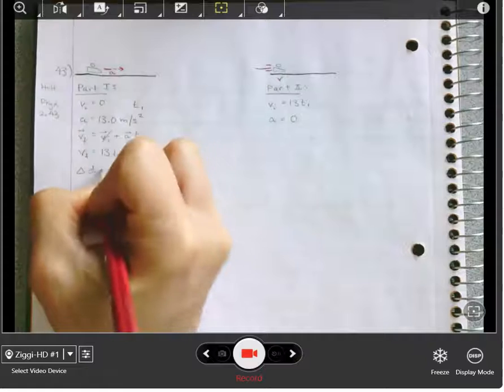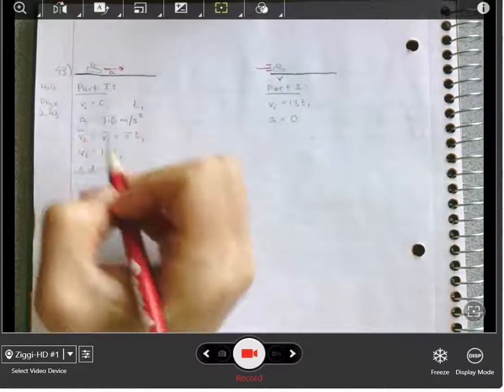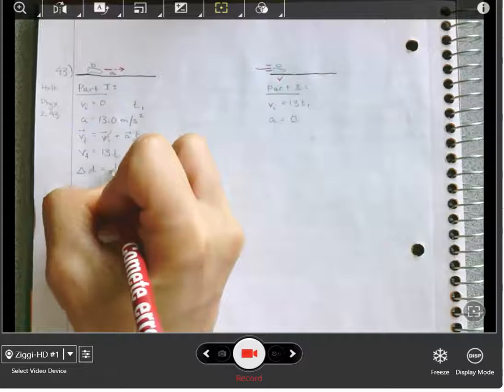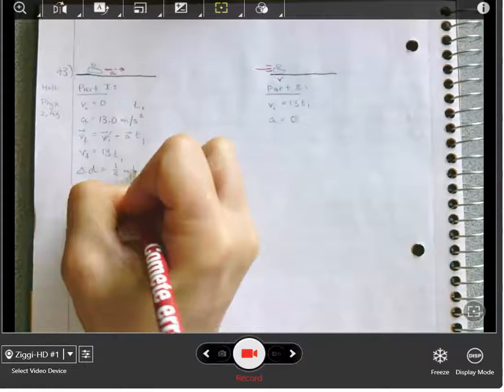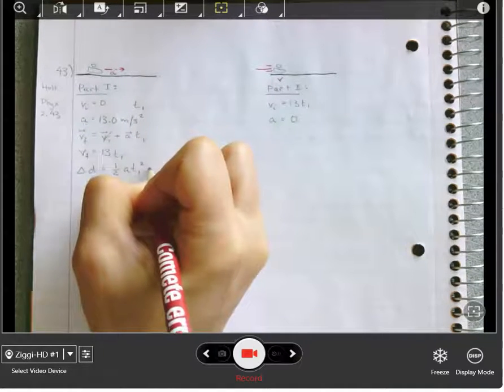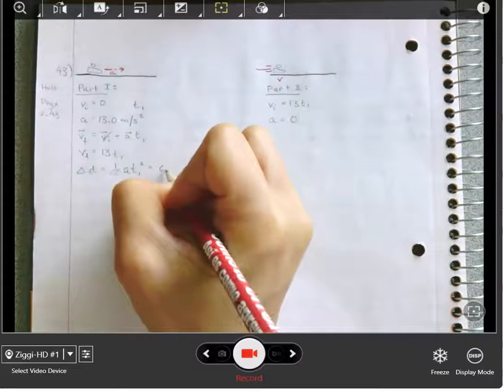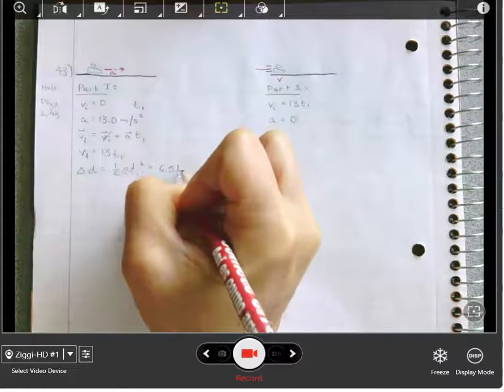Our change in displacement in the x direction is going to be v i t. Oh, we don't need that, that's zero. Plus one-half a t1 squared, which is going to be half of 13 t squared.